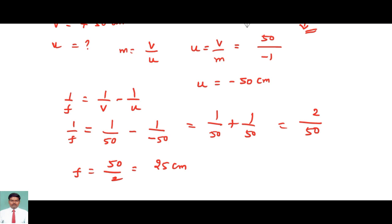So we calculated the focal length, and if we convert into meters it will be 0.25 meters. We know the formula to calculate the power. The power is nothing but the reciprocal of the focal length. That is equal to 1 by 0.25, which equals 4 diopter, and diopter is the unit of power.